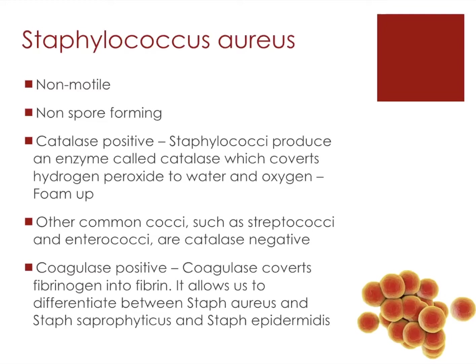The catalase test looks at whether the organism produces an enzyme called catalase. Catalase converts hydrogen peroxide to water and oxygen, and due to this it produces foam. This allows us to differentiate between Staphylococci and Streptococci and Enterococci, because Streptococci and Enterococci are catalase negative. So if there's no foam, then it's likely to be Streptococci or Enterococci.